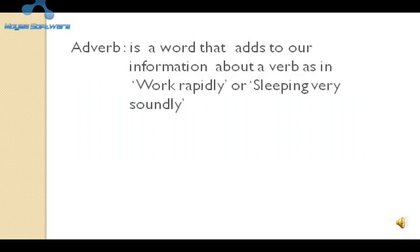सबसे पहले जानने की कोशिश करेंगे कि adverb क्या होते हैं। An adverb is a word that adds to our information about a verb. For example, work rapidly, or sleeping very soundly. जैसे 'work' इस verb के साथ 'rapidly' यह adverb आया, 'sleeping' इस verb के साथ 'soundly' यह adverb आया। तो adverb, verb में extra, यानी ज्यादा information डालने वाले शब्द होते हैं, इसलिए इन्हें adverb कहा जाता है।